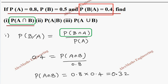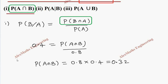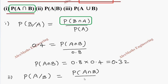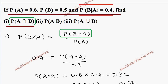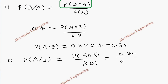In the second subdivision, they ask for P(A|B). Using the formula P(A|B) = P(A∩B) / P(B), the value of P(A∩B) is 0.32 and P(B) is 0.5. After division, we get 0.64.